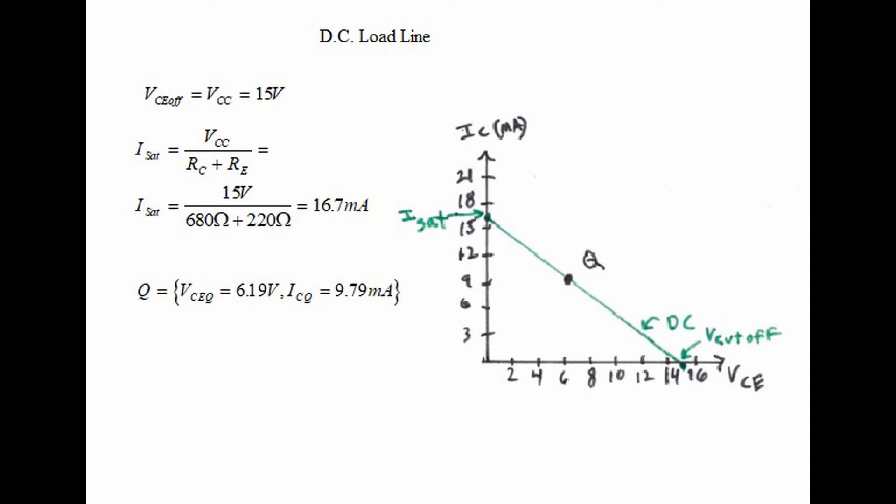Next plot the Q point: VCEQ 6.19 volts and ICQ 9.79 milliamps. Once you plot the Q point we want to see if the Q point is in the middle of the DC load line, which means that the circuit has been well designed.